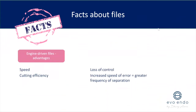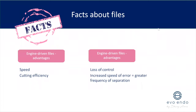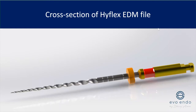Engine-driven files — rotary or reciprocating — have speed and cutting efficiency as their main benefits, but their main disadvantages are loss of control and an increased speed of error. If you haven't planned the process you're more likely to get separated instruments, deviations, or canal blockage due to ineffective irrigation. Quick doesn't necessarily mean better, but if there's a more effective way of doing it, I'll definitely choose that.